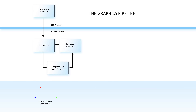The next thing that happens is called primitive assembly. The graphics chip connects all of the vertices together to create triangles. So the result of the vertex shader combined with the primitive assembly step is triangles in screen projection space.